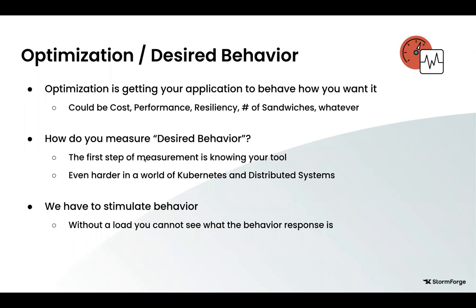How do you measure desired behavior? In order to know what that desired behavior is, you have to have some form of measurement. You have to understand the application and understand what properties are the desired properties in the first place, which in the world of Kubernetes applications, in distributed systems, in this cloud native ecosystem, keeps getting harder. Applications are more spread out. We've gone from a world of monoliths to a world of microservices. Every individual piece is behaving in its own unique way, and the idea of how to optimize is more and more complicated as we make the apps more and more abstracted.